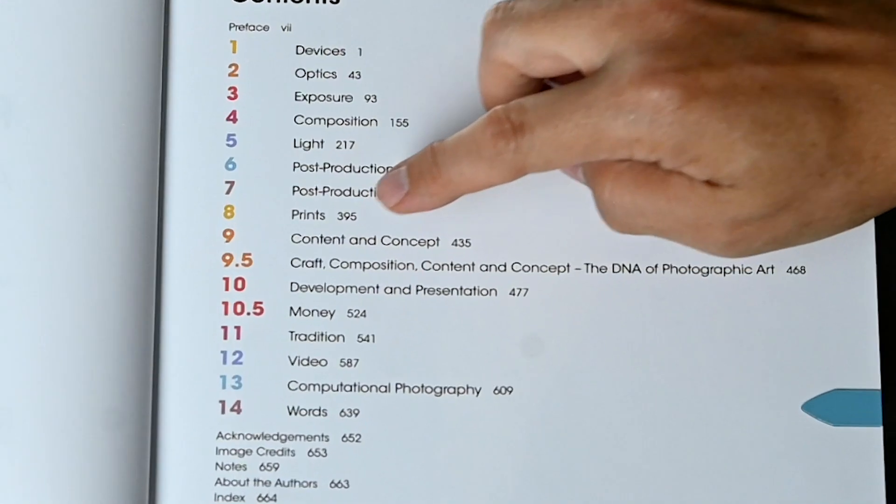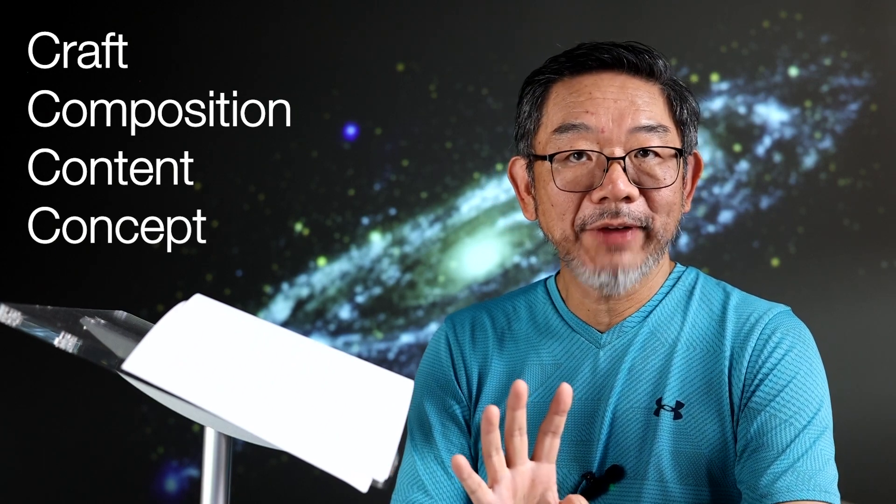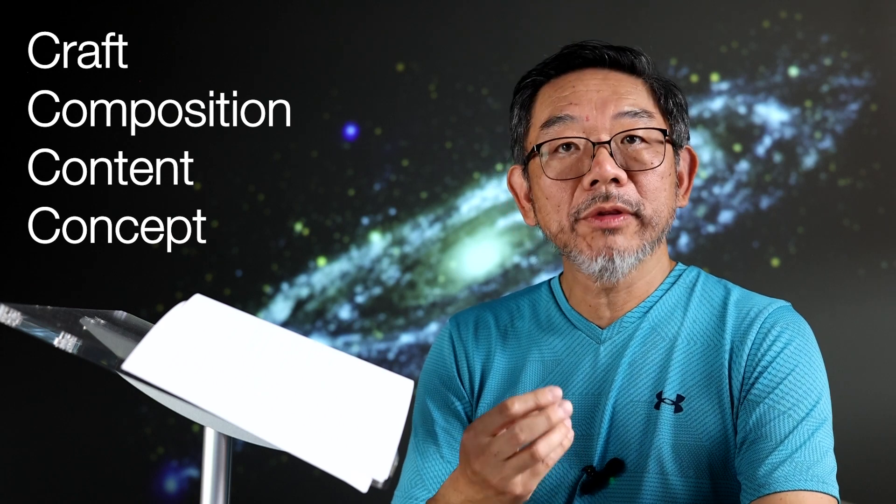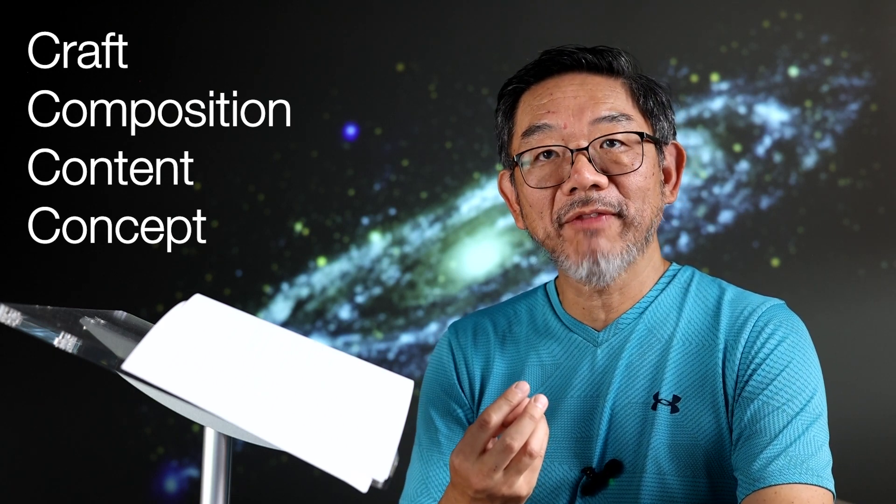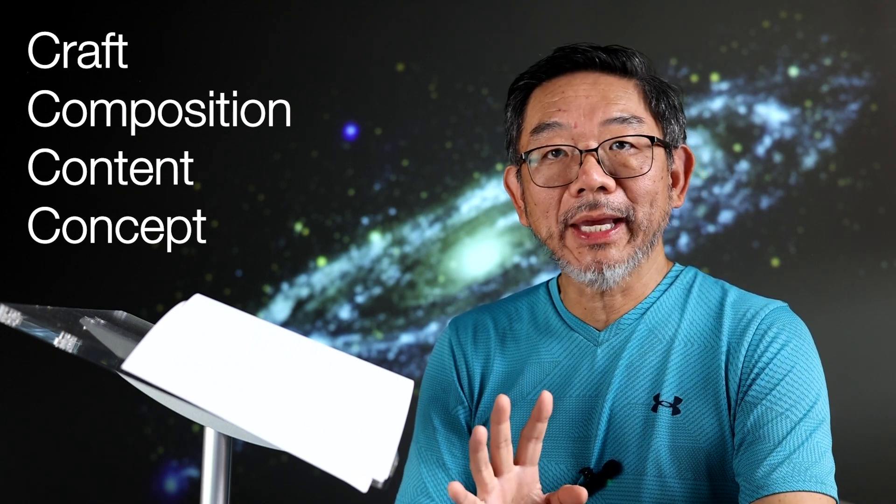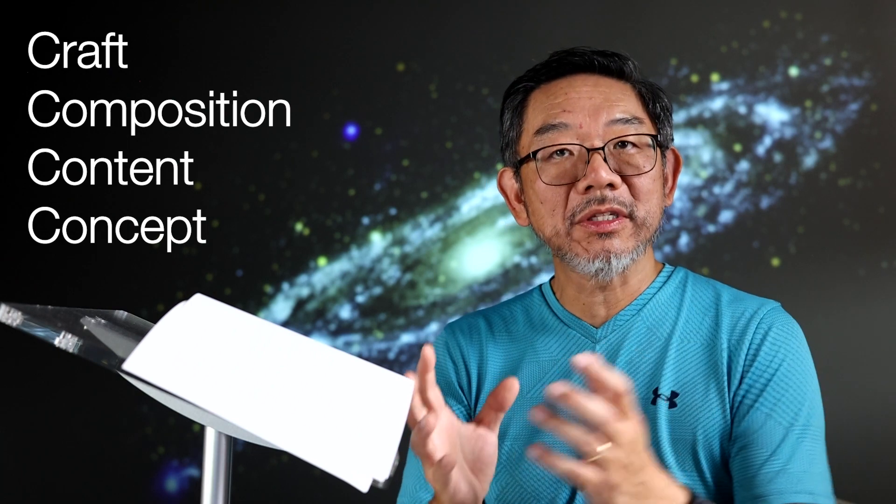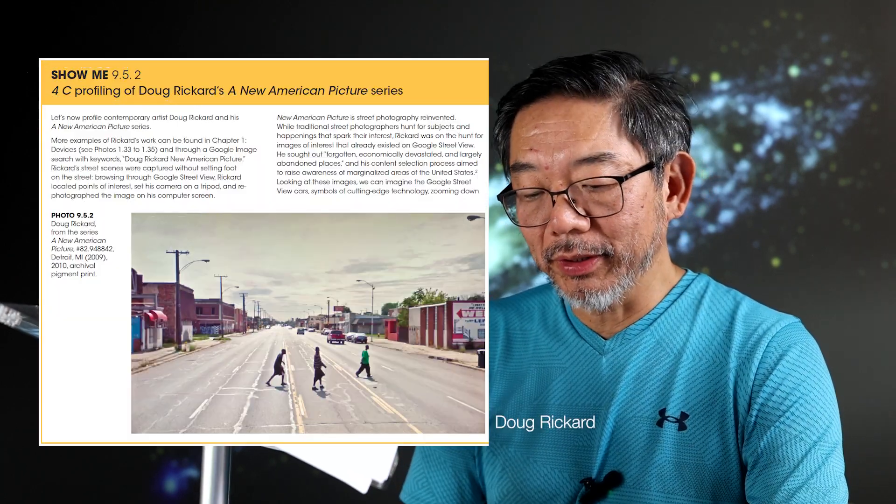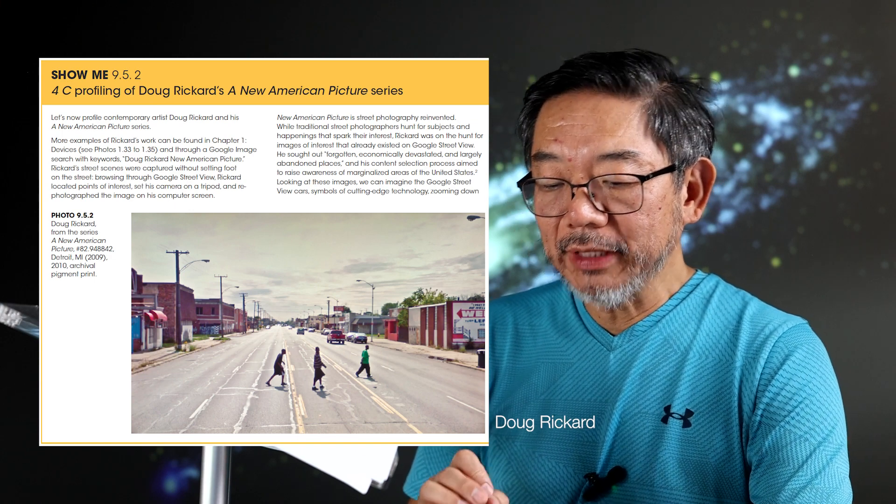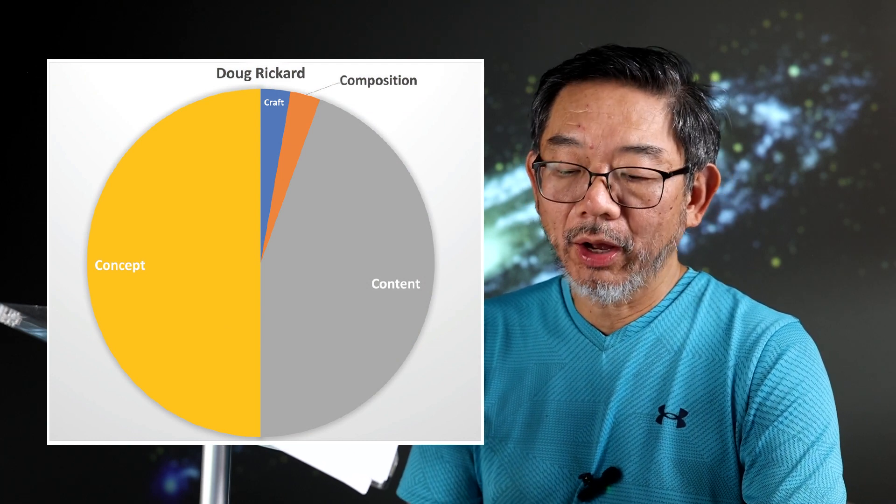So here we are at chapter 9.5: Craft, Composition, Content, and Concept. The Four C's. The Four C's are the four venues of an artist's creativity, also the four directions for an artist to invest his or her effort on, also the four ways to appreciate another artist's work. So the Four C's help both on the creative end and on the receiving end of art. Halfway into the book, this short yet important chapter concludes the previous chapters into the fundamental framework of photographic art.